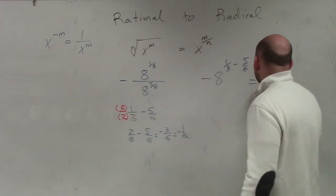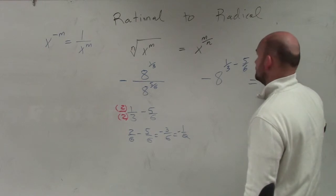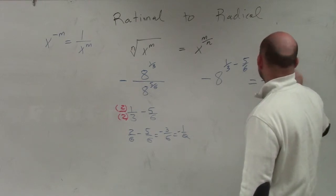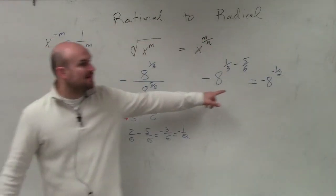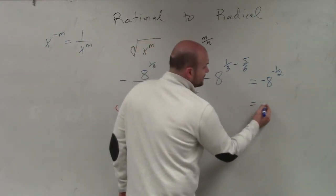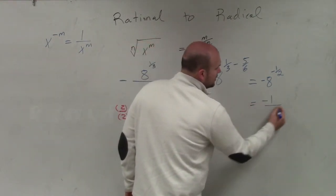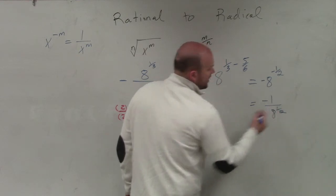So this now can be rewritten as negative 8 to the negative 1/2. So therefore, to rewrite that as a positive power, I now have to rewrite this in the denominator. So it's still negative. I'll put just the negative of the 1 over 8 to the positive 1/2 power.